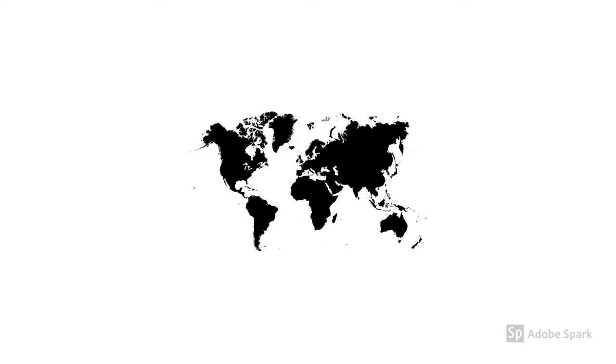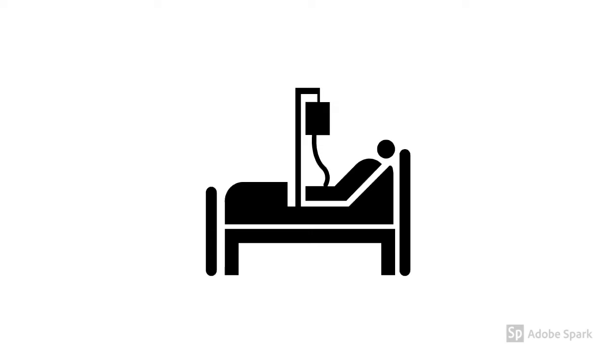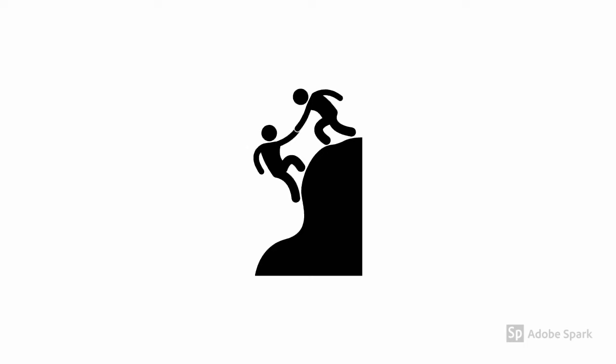So what do these two forms of euthanasia tell us about assisted suicide? I would argue that they show us that assisted suicide is more a form of euthanasia than a different process entirely. Why? Because for the person to be assisted in taking their own life, they have to be helped towards this goal.